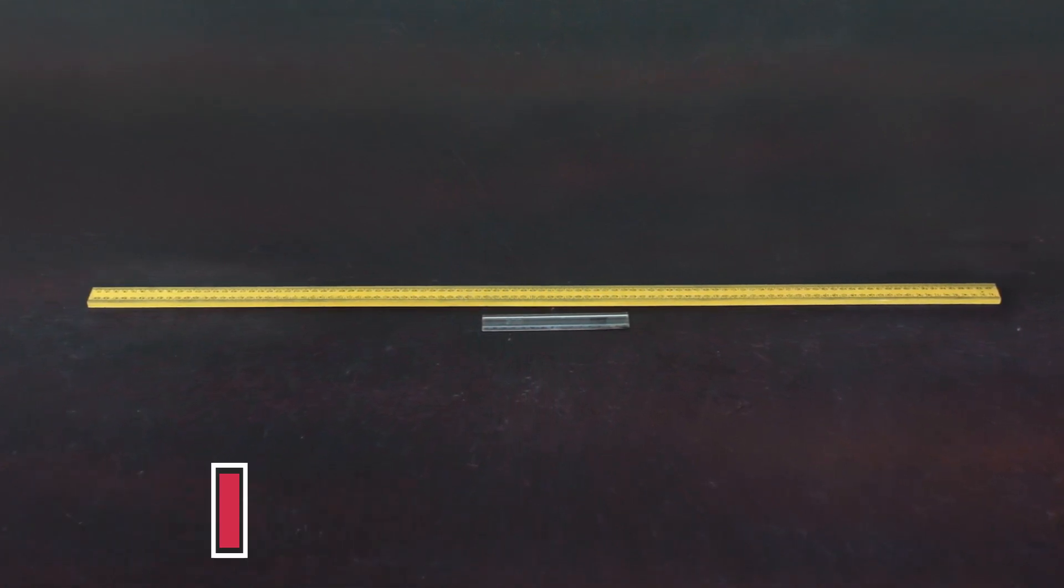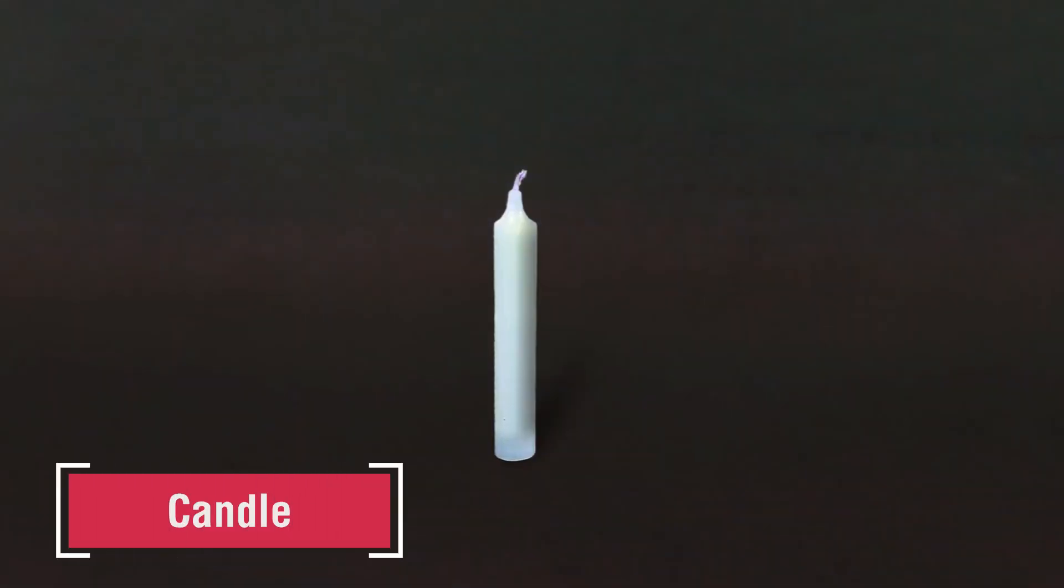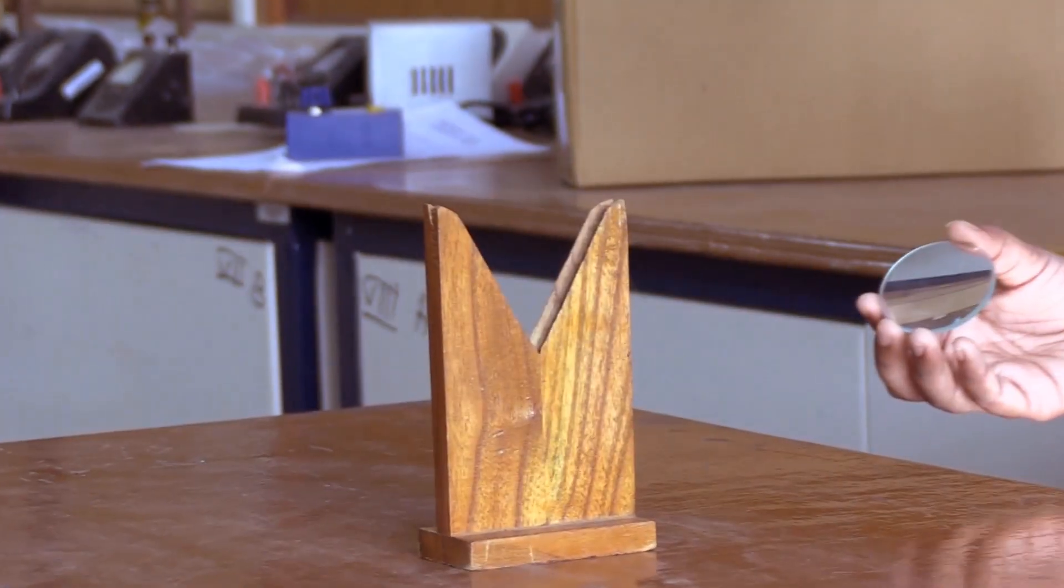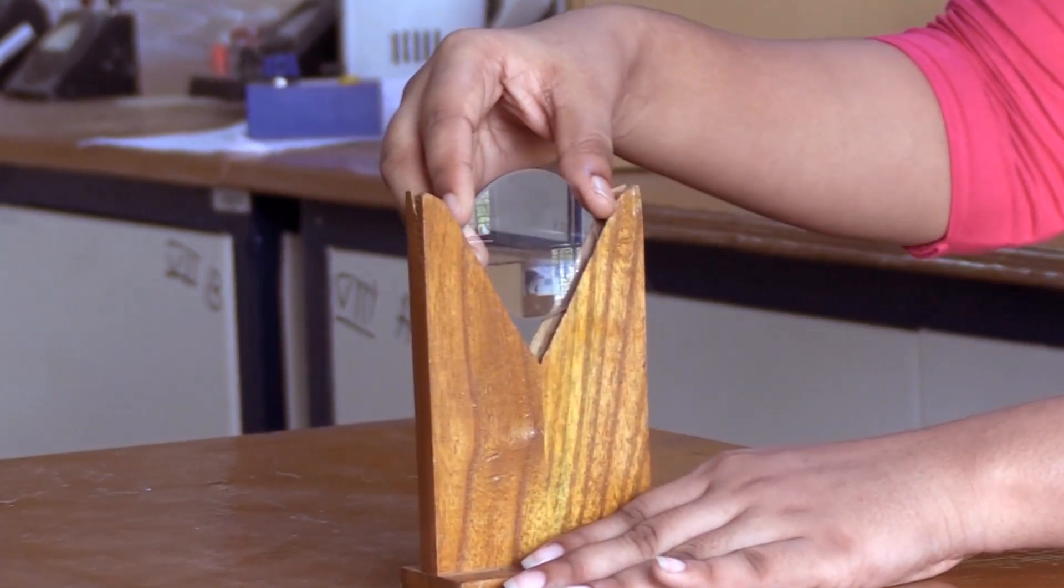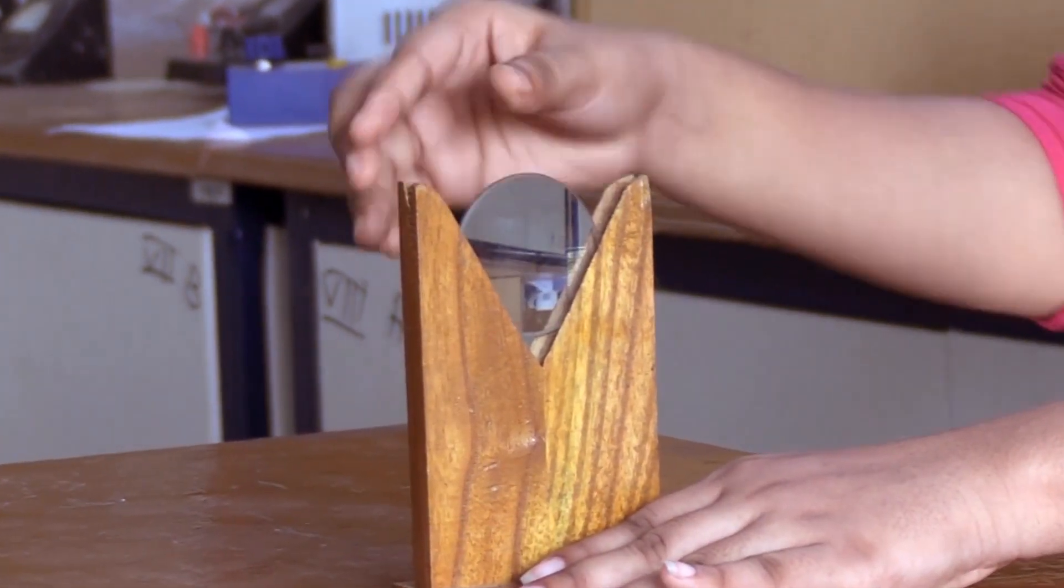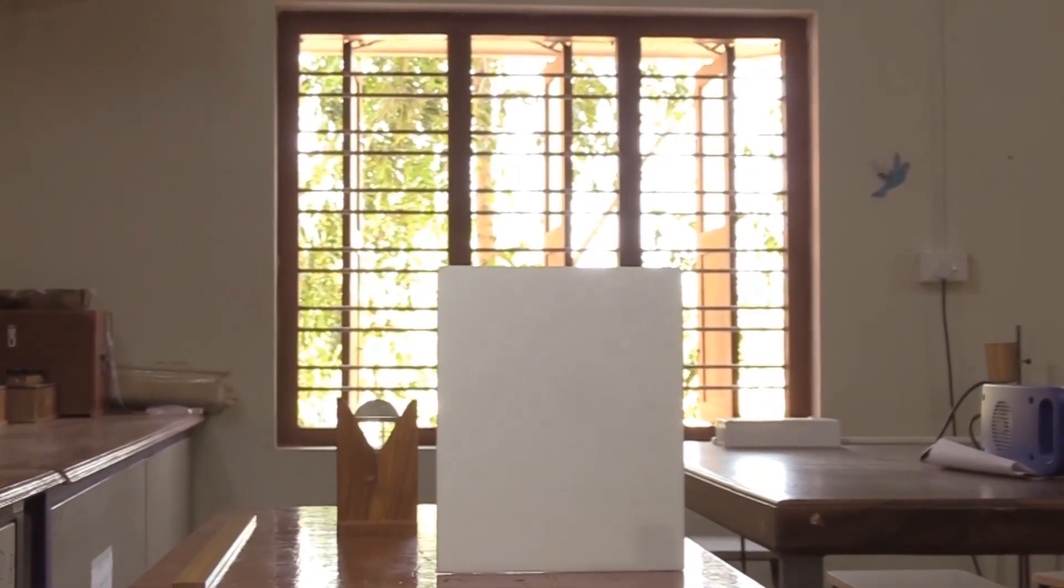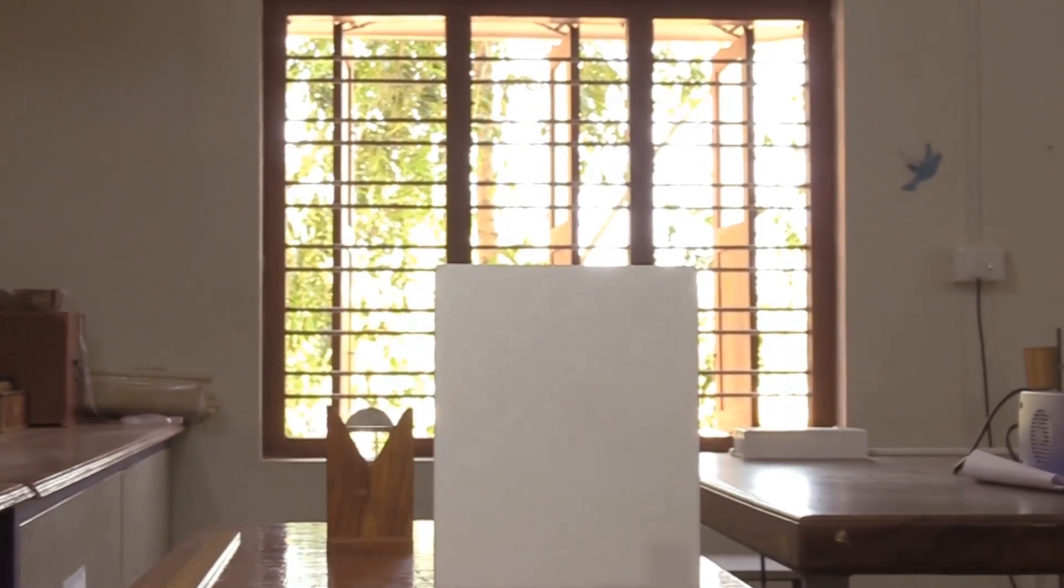Procedure: As a first step, let us find the approximate focal length of the given lens. Take a thin convex lens, place it vertically on a lens holder kept on a table. To determine the approximate focal length of the convex lens, focus rays from a distant object, for example a tree, using a convex lens.